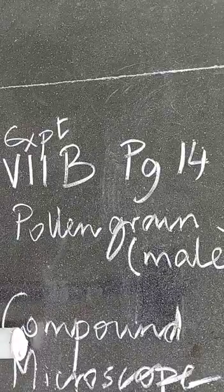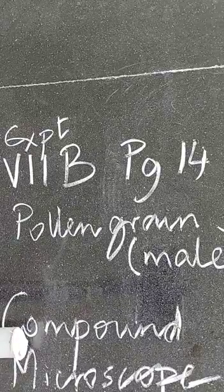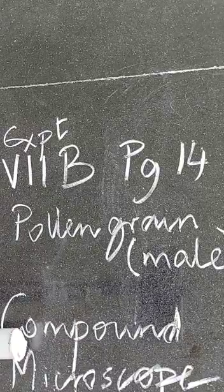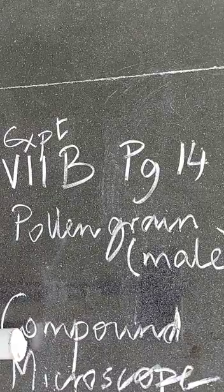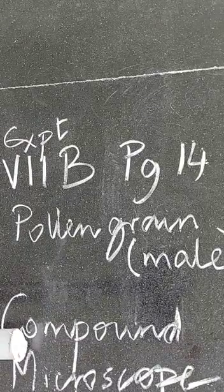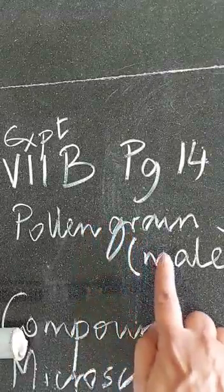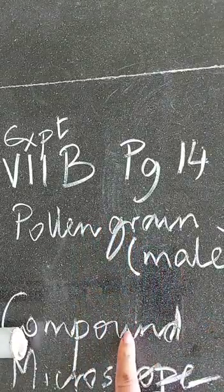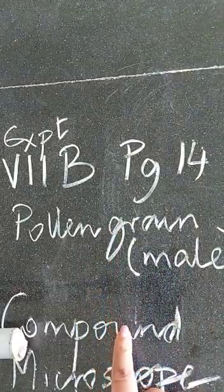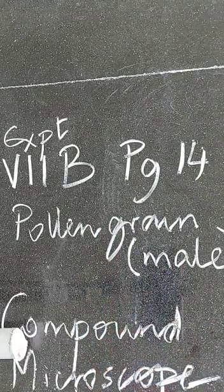Students, today we will be doing experiment 7b which has to be done on page 14. The pollen grain of hibiscus flower. The pollen grain is the male part of the flower and we observe the mounting of the pollen grain under the compound microscope.